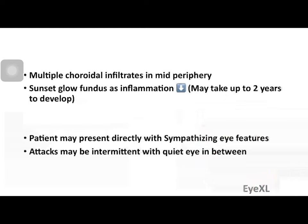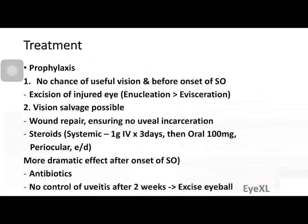Over time as inflammation reduces, a feature called sunset glow fundus develops — also seen in Vogt-Koyanagi-Harada (VKH) syndrome — and may take up to two years to develop due to the chronic low-grade nature of the inflammation. Two important facts: the patient may present directly with features in the sympathizing eye, with very little inflammation in the exciting eye (called a white eye). Also, the attacks may be intermittent, with a quiet period between flares in either or both eyes.